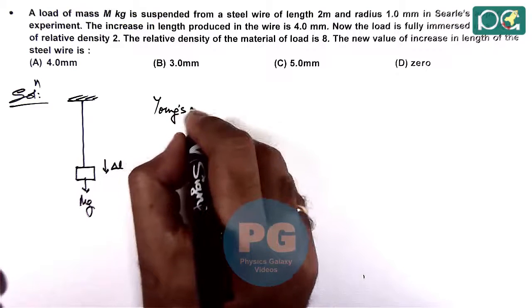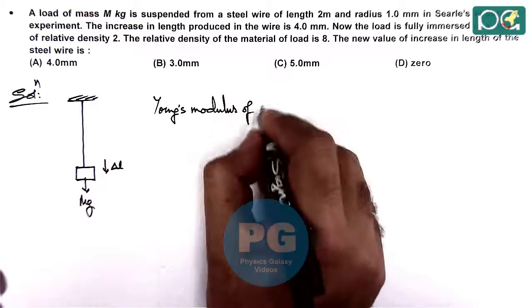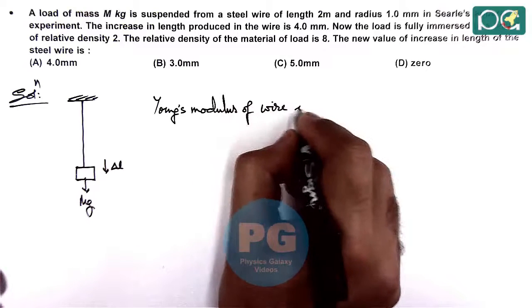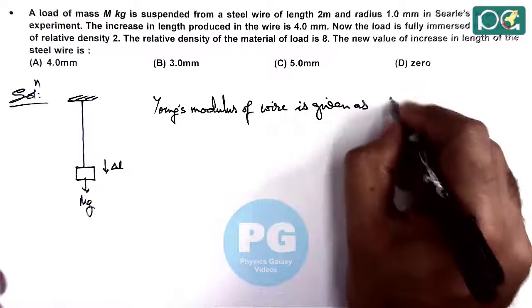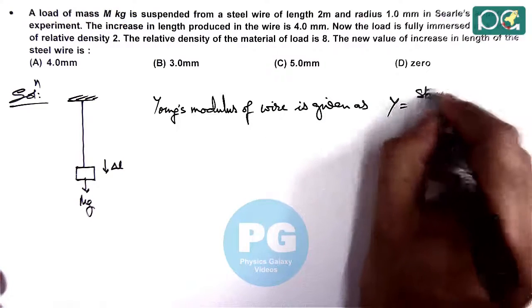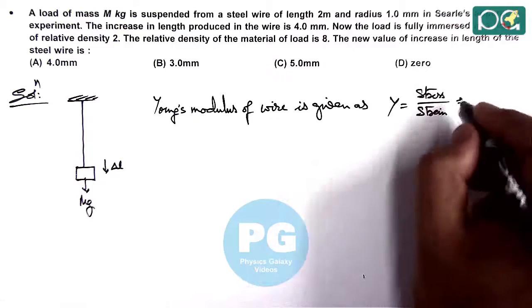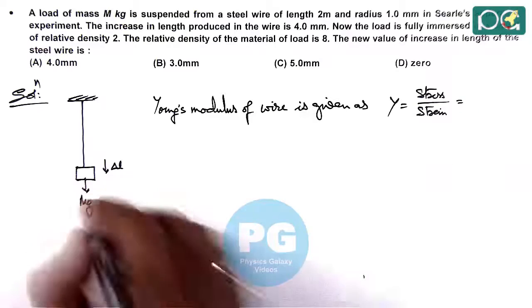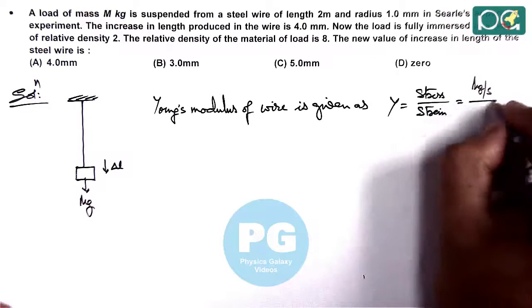And we can write Young's modulus of wire is given as stress by strain, where stress is the external weight mg divided by cross sectional area of wire, divided by delta L by L.